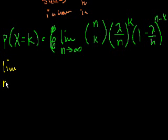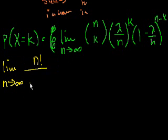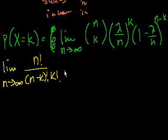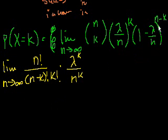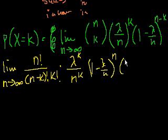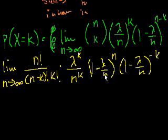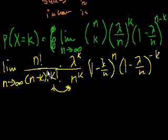This is equal to the limit as n approaches infinity. Let me write out the binomial coefficient: that's n factorial over (n minus k) factorial times k factorial. Times lambda to the k over n to the k. And then 1 minus lambda over n to the n, times 1 minus lambda over n to the minus k. You can view them both as being in the denominator, so you can change the order of division or multiplication.